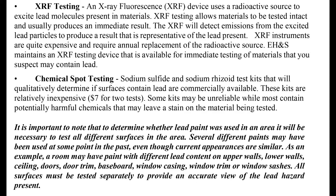Chemical spot testing: Sodium sulfide and sodium rhodizonate test kits that qualitatively determine if surfaces contain lead are commercially available. These kits are relatively inexpensive — about $7 for two tests. Some kits may be unreliable, while most contain potentially harmful chemicals that may leave a stain on the material being tested. It is important to note that to determine whether lead paint was used in an area, all different surfaces must be tested. A room may have paint with different lead content on upper walls, lower walls, ceiling, doors, door trim, baseboard, window casing, window trim, and window sashes. All surfaces must be tested separately to provide an accurate view of the lead hazard present.